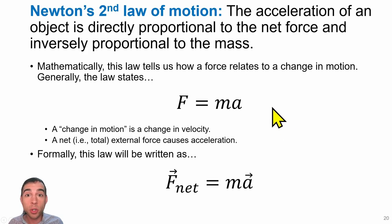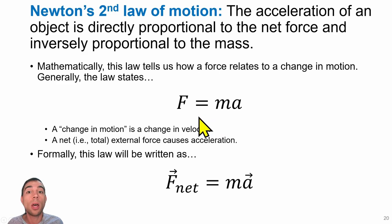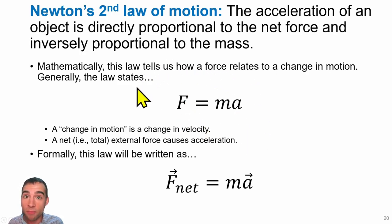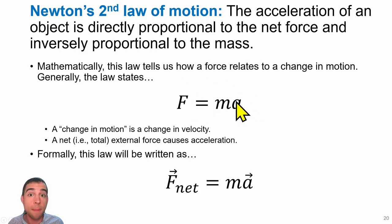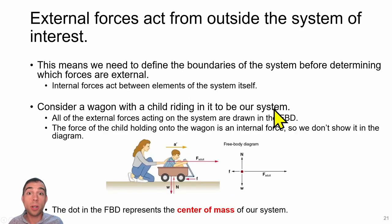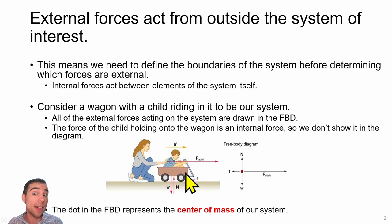Newton's second law of motion states that for an object that is accelerating, it will feel a non-zero net force. This means some amount of force is acting on the object to cause it to accelerate. The second law essentially boils down to the equation F equals ma, where the net force is associated with acceleration and mass.